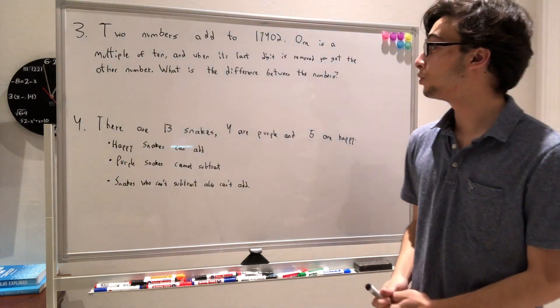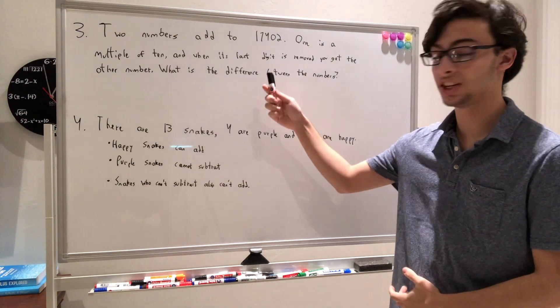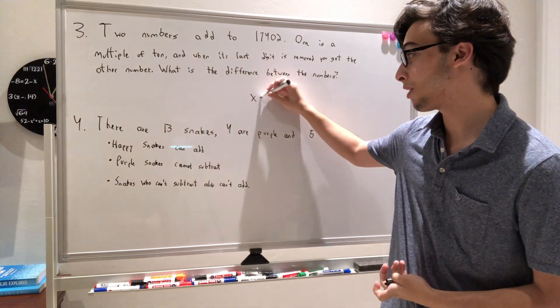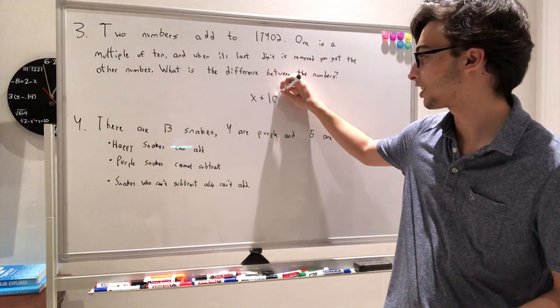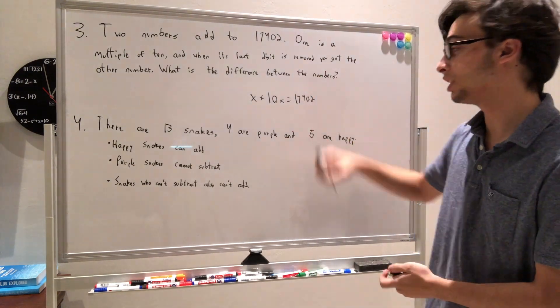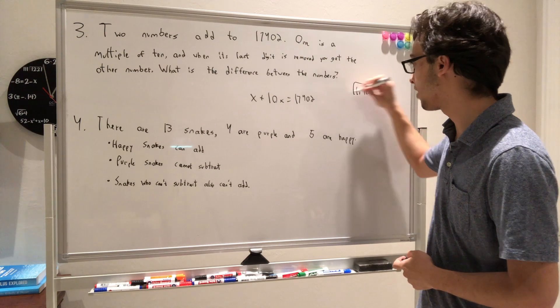Starting with problem 3, we see that we have two numbers add to 17,402, and one's a multiple of 10. But when you remove the last digit, which is a 0, you get the other number. So if the other number is x, then you have the first number is 10x. So these must add up to 17,402. So all you need to do is divide both sides by 11.